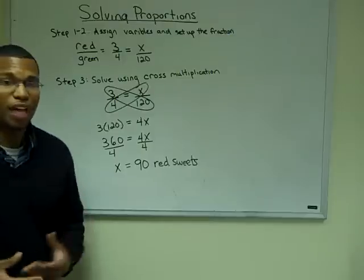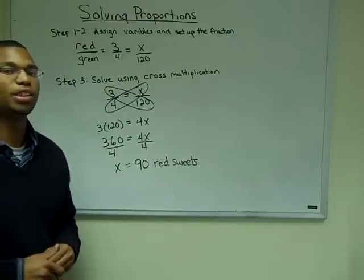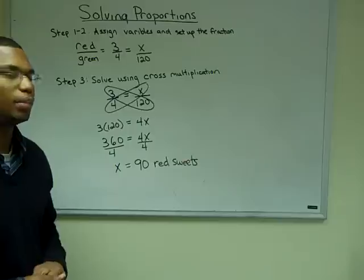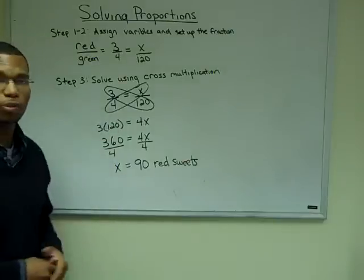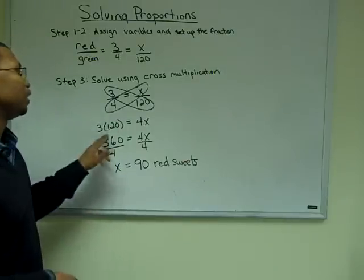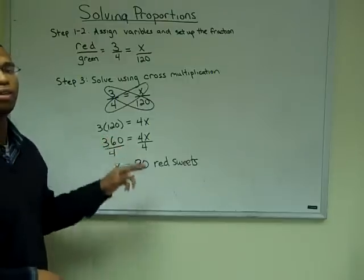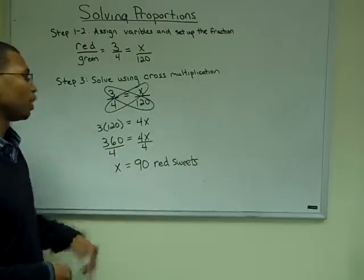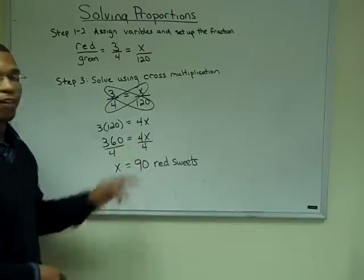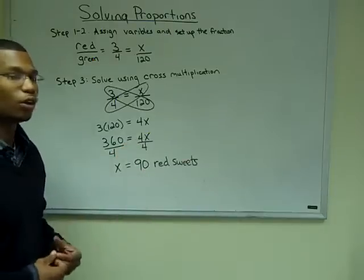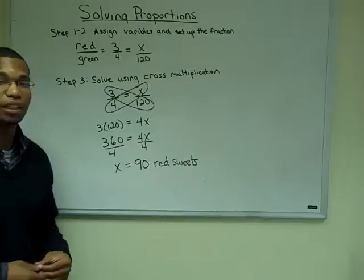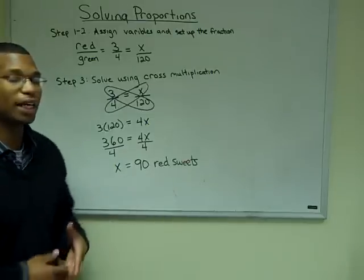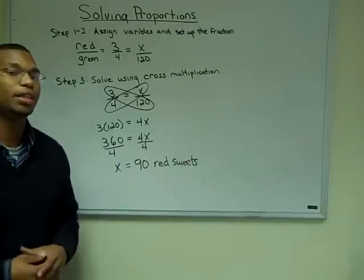Now that we have our proportion set up, we can use cross multiplication to solve for the missing element. By using cross multiplication, we get three times 120 is equal to four times x. Now to solve for x, we simply divide both sides by four and we have x isolated. Therefore, we get that x is equal to 90 red sweets.